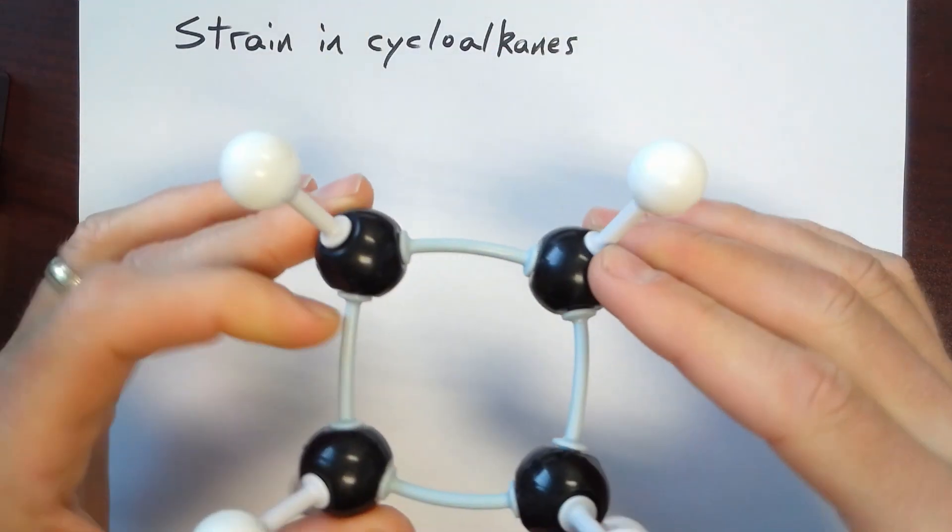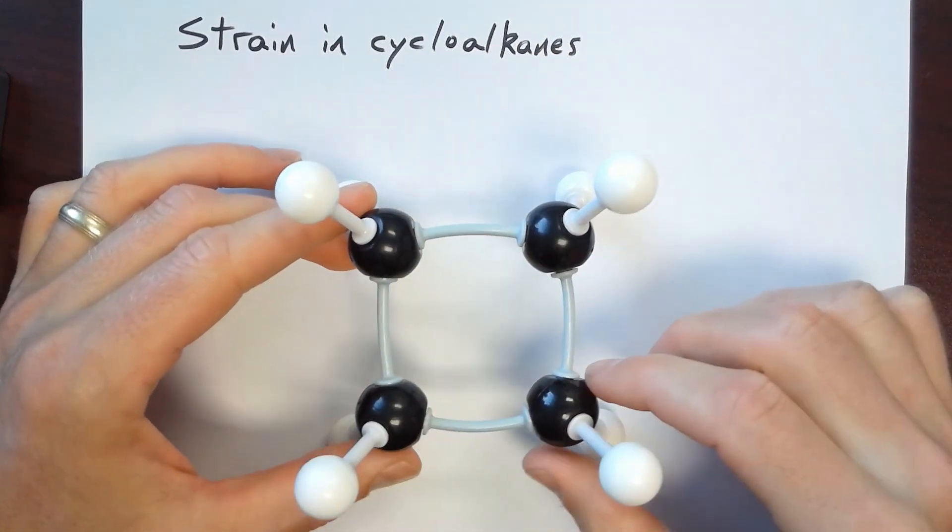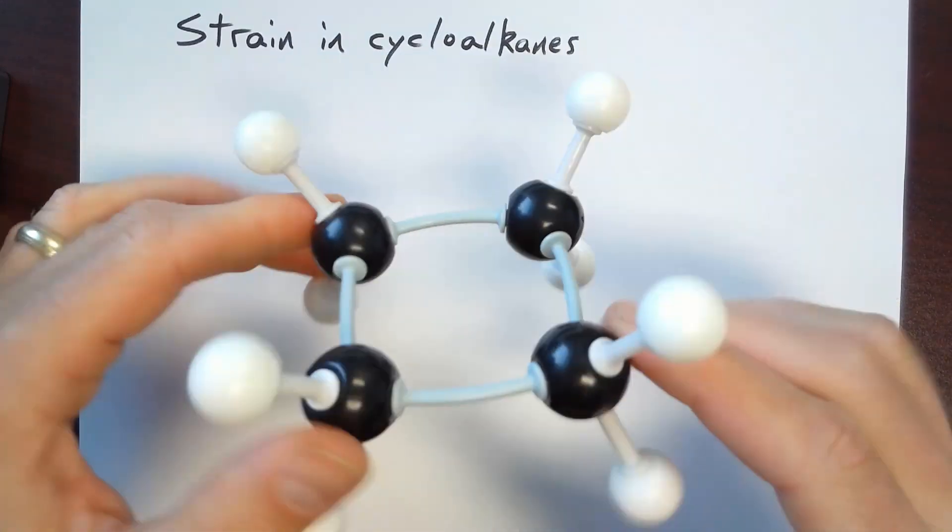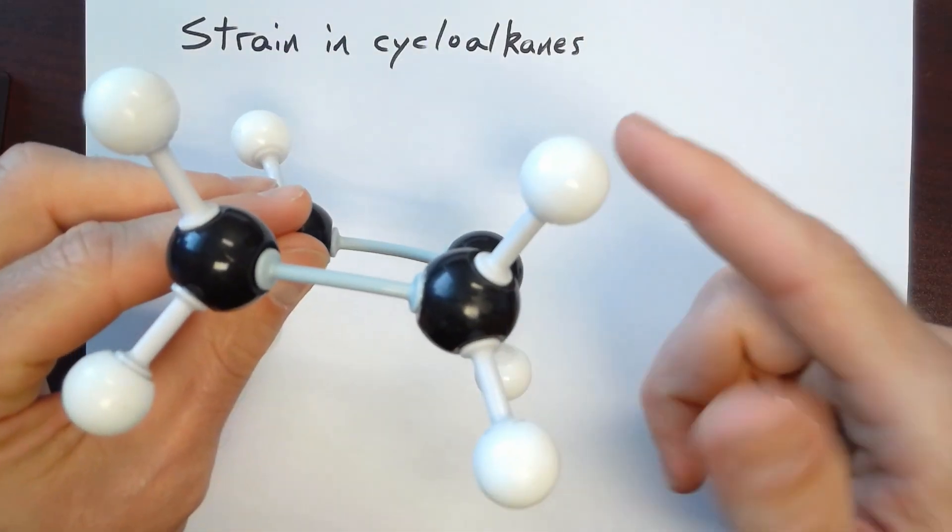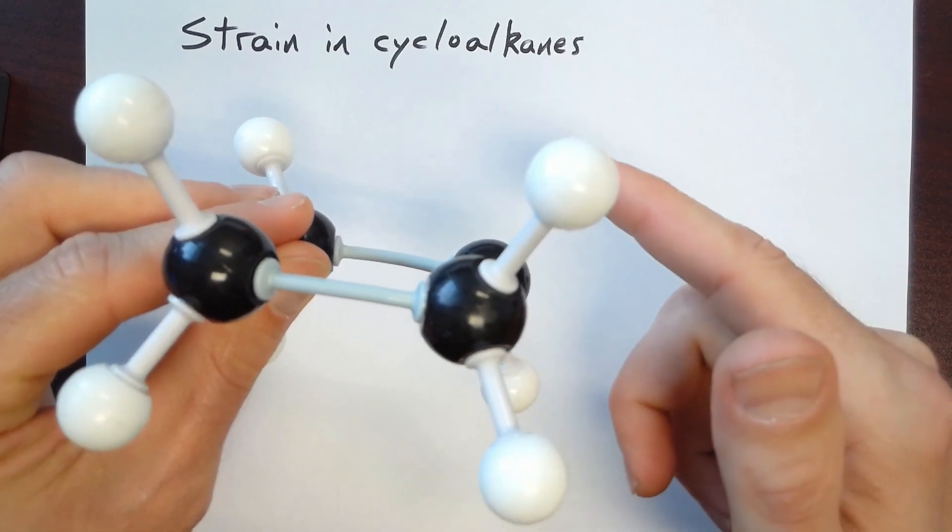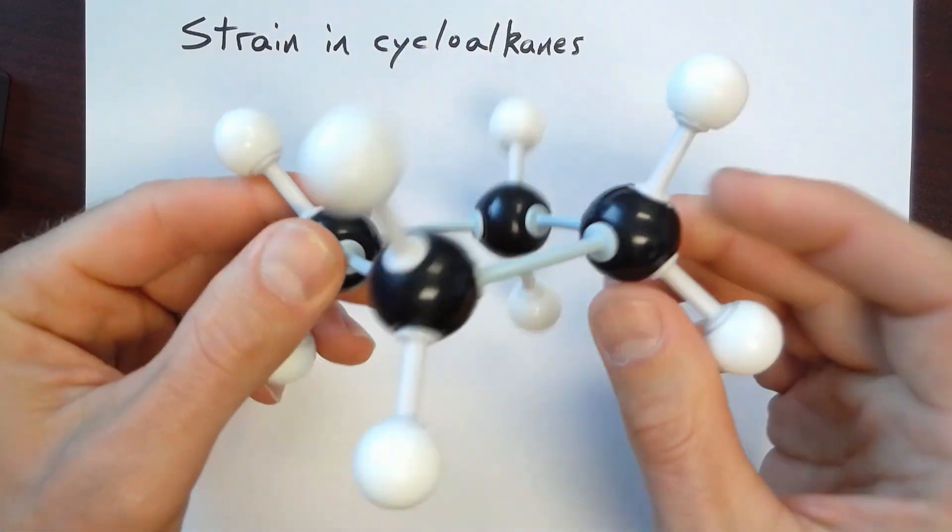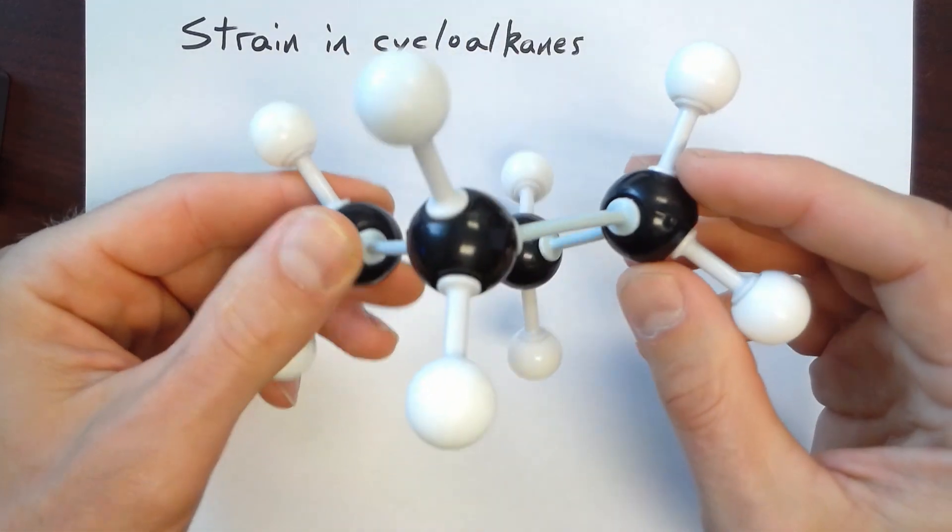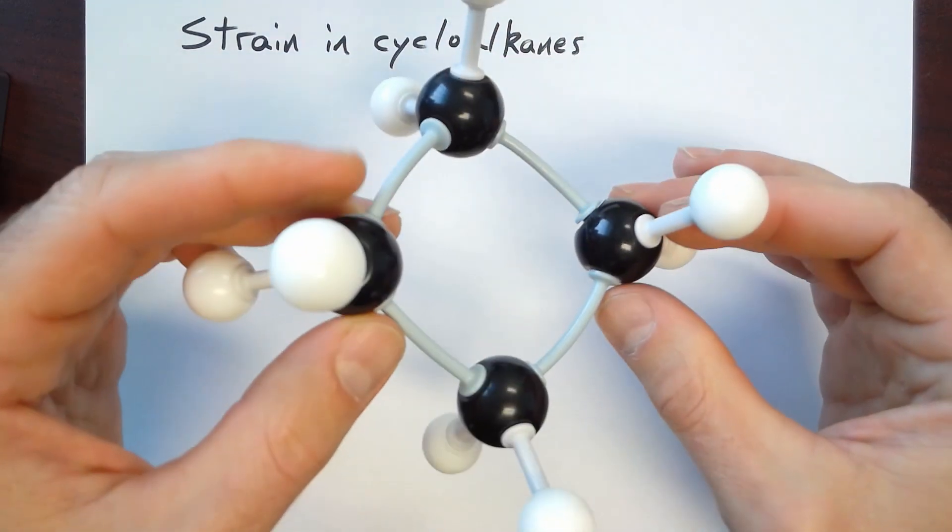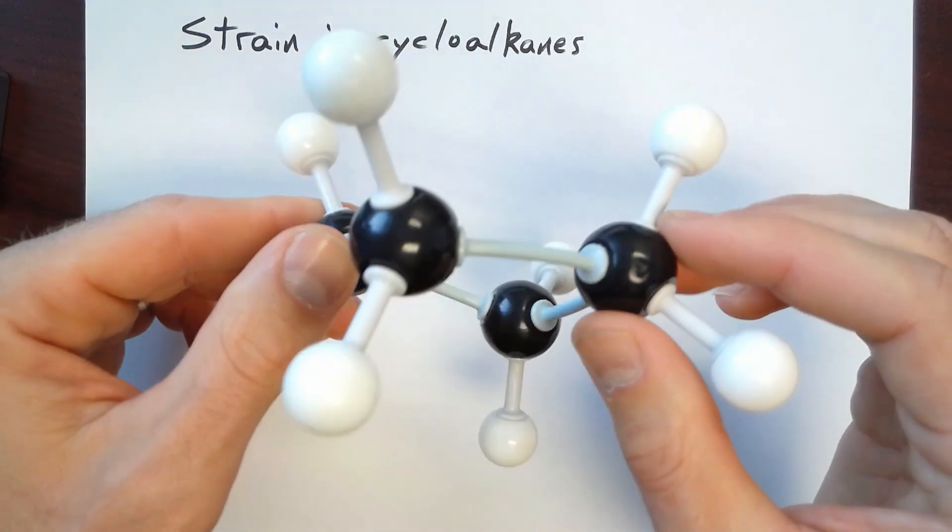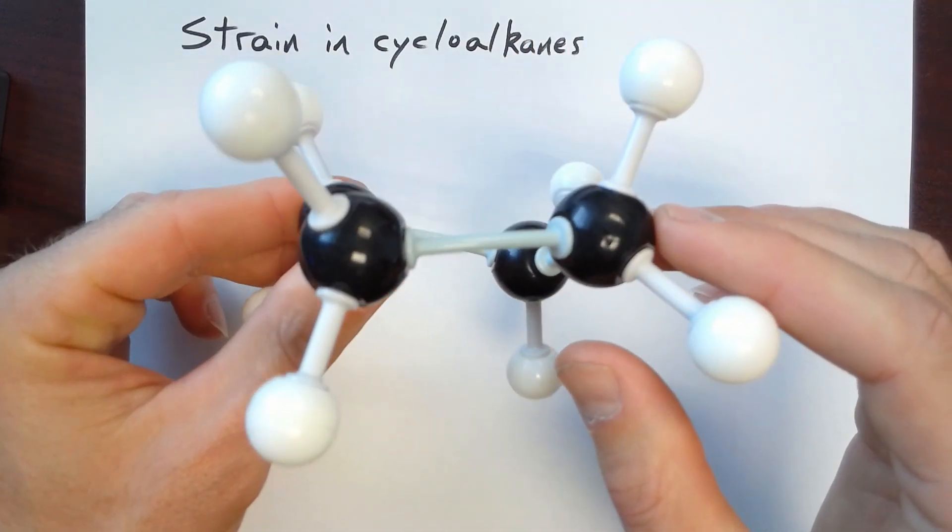Cyclobutane has less angle strain because now these angles want to be approximately 90 degrees. But in order to relieve torsional strain, which is caused by the eclipsing sigma bonds with these hydrogens, cyclobutane actually exists in a puckered configuration. So it's not planar. It actually puckers just a little bit, so the angles aren't exactly 90 degrees. But that relieves a little bit of that torsional strain that you would otherwise have.